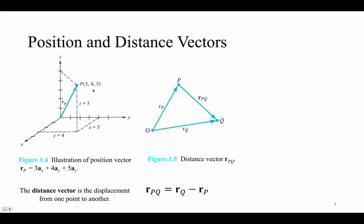Another thing that will be very useful later in the course is to have a notion of the distance or displacement between two points. Say we wanted to know the displacement between point P and point Q. The distance vector is simply the displacement from one point to another. If we have a vector R sub Q that points from the origin to Q, and another vector R sub P that points from the origin to P, then the distance vector from P to Q is simply R sub Q minus R sub P.